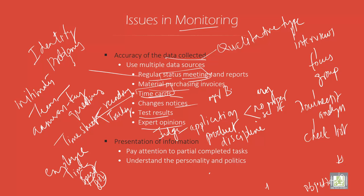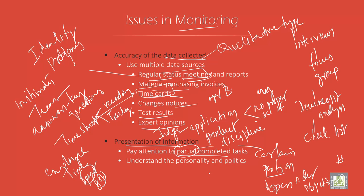Finally, you have to present information, paying attention to the partial completed task — partial means only a certain portion. That certain portion has to be completed and the remaining portion is kept as an open order. Then the project managers need to check whether they are done according to the objectives and goals of the company.